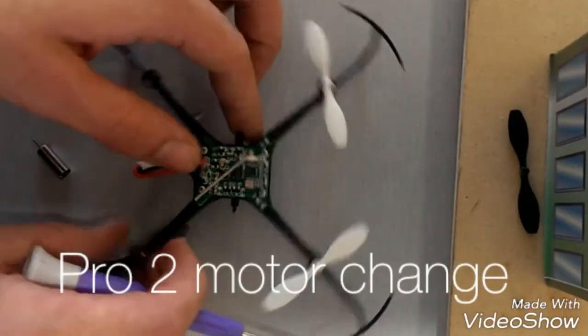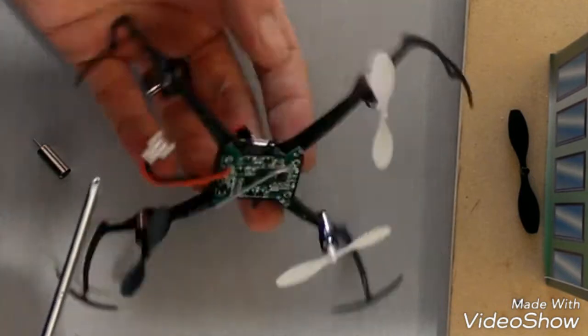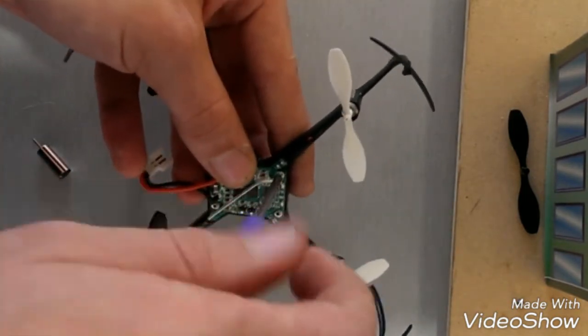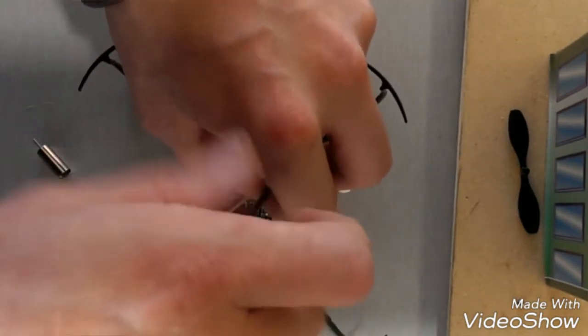So I've got here a Pro 2 that needs a new motor. As you can see, it doesn't have one at all. I'm going to show you guys how to quickly get in here and do the motor exchange. There's four little screws on the board here.